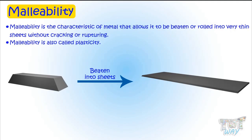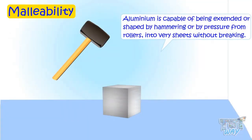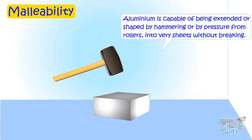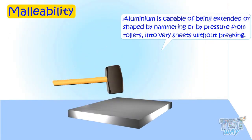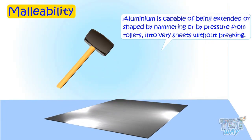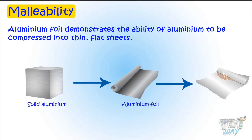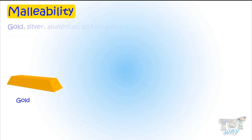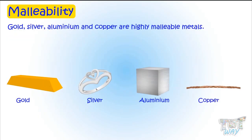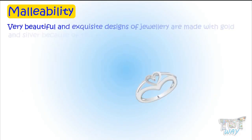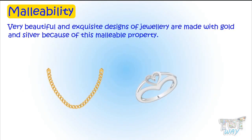Malleability is also called plasticity. Aluminum is capable of being extended or shaped by hammering or by pressure from rollers into very thin sheets without breaking. Aluminum foil that we all use demonstrates the ability of aluminum to be compressed into very thin, flat sheets. Gold, silver, aluminum, and copper are some of the highly malleable metals. Very beautiful and exquisite designs of jewelry are made with gold and silver because of this malleable property.